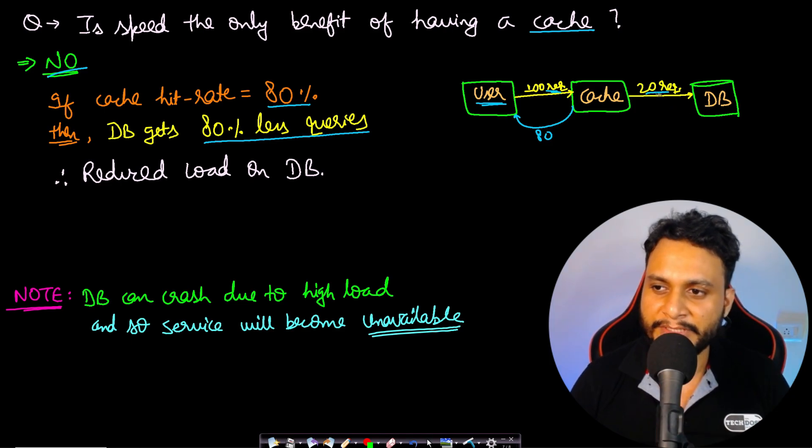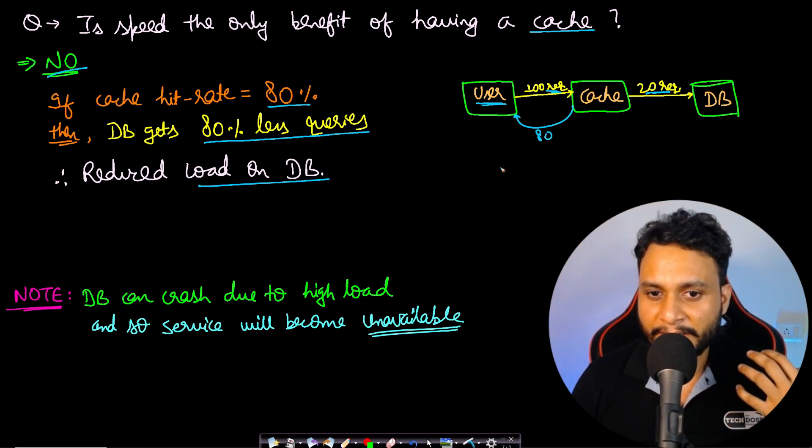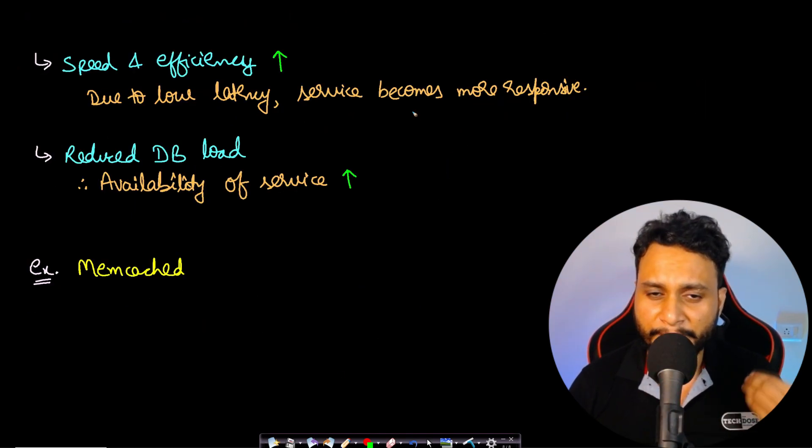This only happens if the data was not present in the cache. So we are reducing the load on the database. If the load on the database increases, then the database can come down. If it is overloaded, it can crash, and therefore your service can be entirely unavailable. Therefore, by adding cache we are reducing the load on the database, so we are reducing the chance of database crashes by overloading. Therefore, we are increasing the availability of our service.